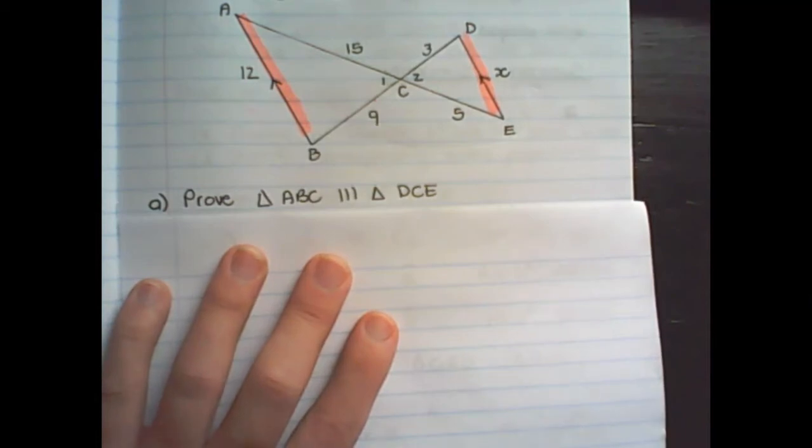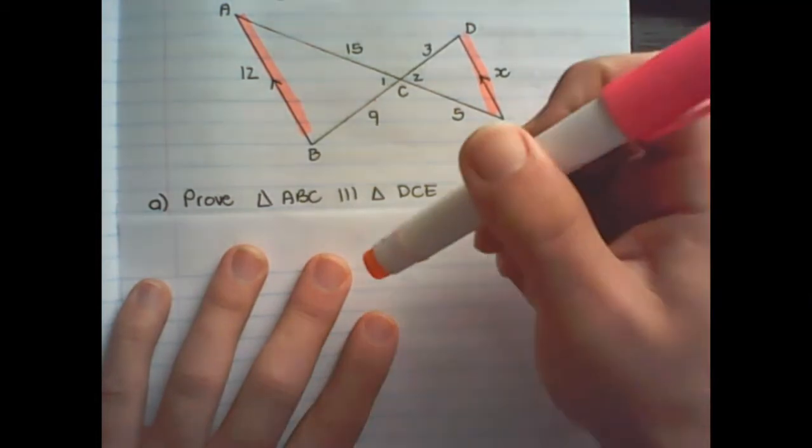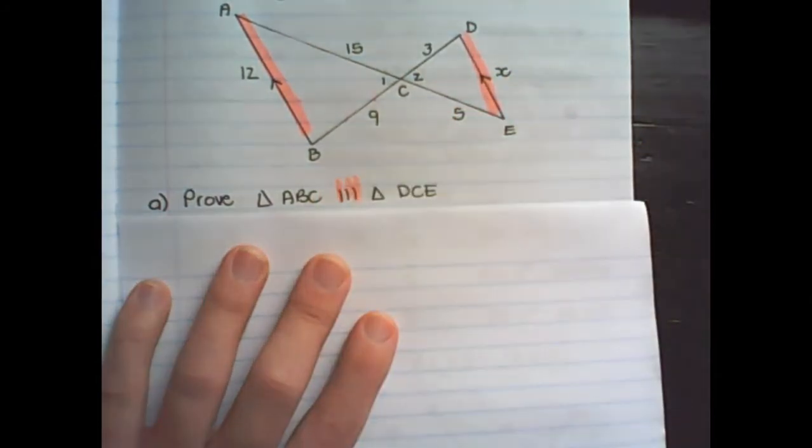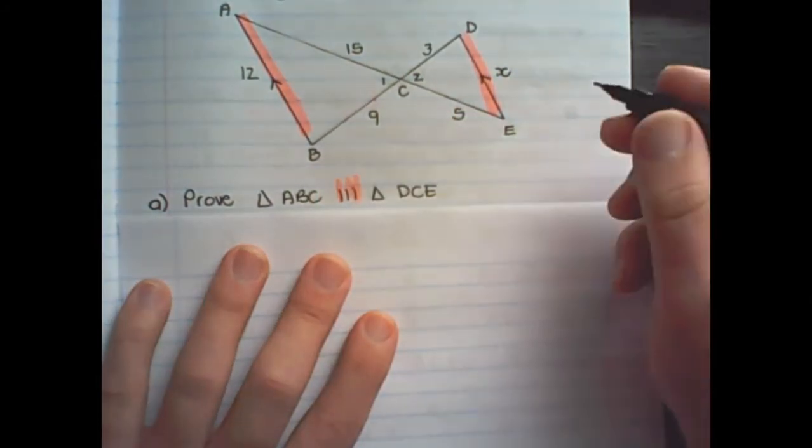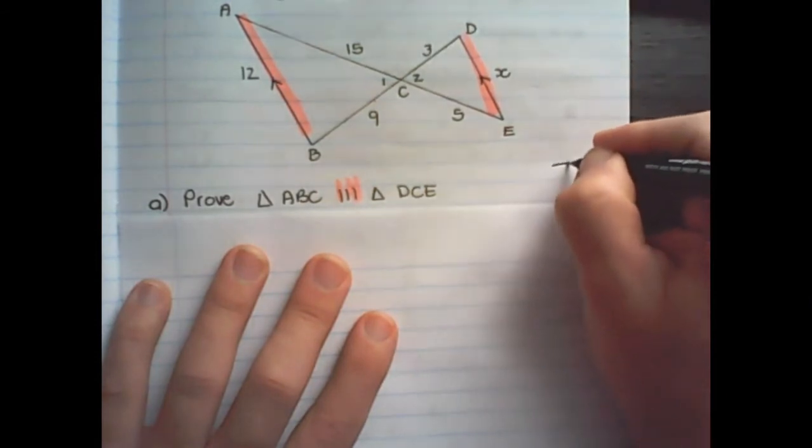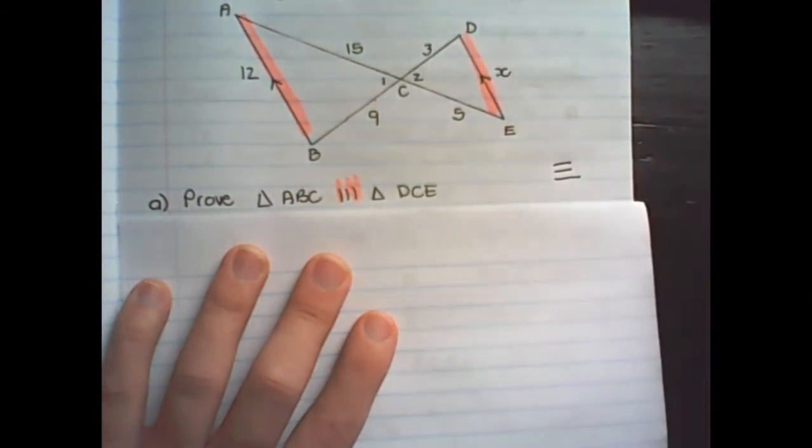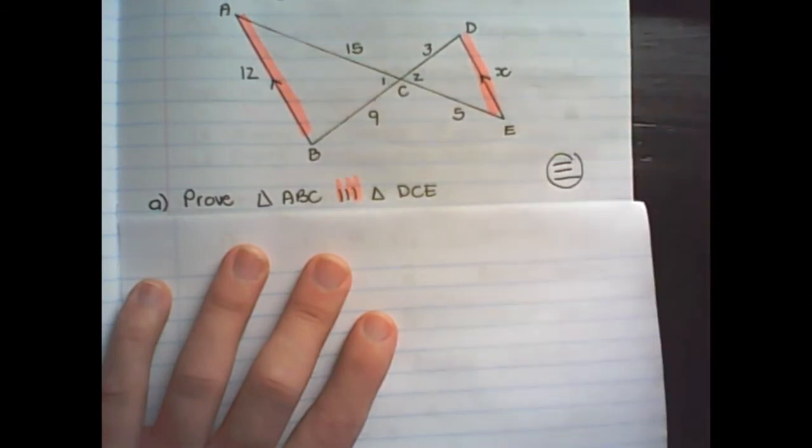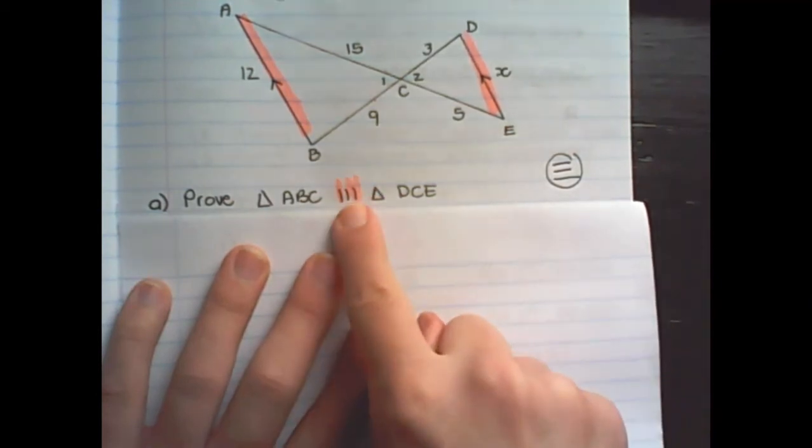Remember the notation for similarity is three lines in a vertical position. For congruency it is three lines that are horizontal. But congruency means the two triangles are exactly the same size and exactly the same shape. Similarity means they have the same shape, but not necessarily the same size.